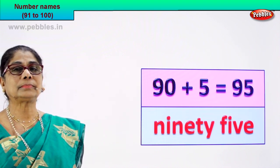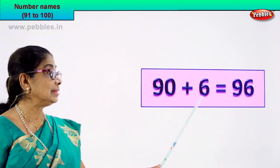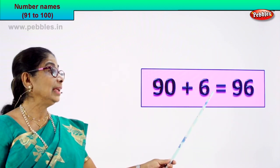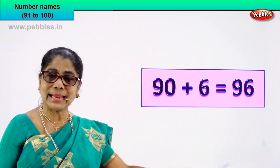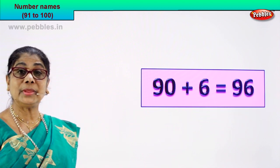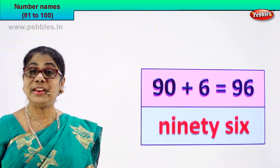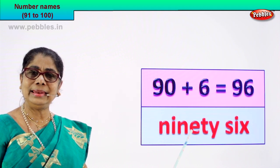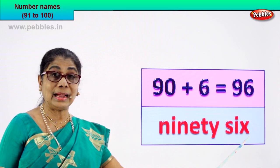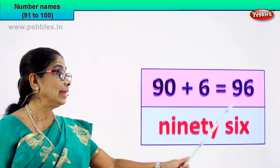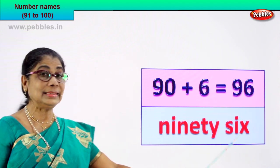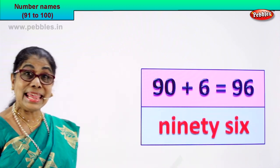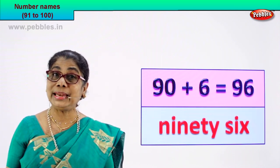Shall we go to the next numeral? 90 plus 6 is equal to ninety-six. 9 and 6 — ninety-six. How do we write its name? You know to spell ninety, you know to spell six. It's very easy. Spell: N-I-N-E-T-Y — ninety — S-I-X — six. 96 — ninety-six. You know the numeral and you know its name. Very good!